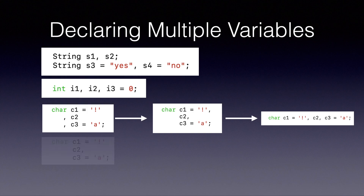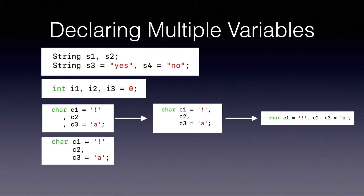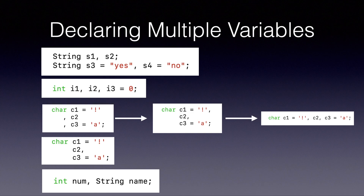Now let's look at the next one. This is not a valid statement, and the reason it's not valid is there is a comma missing after c1. As mentioned, we should always include a comma between various variables. And as a last example, this one is also not valid because we are trying to declare two different types of variables — int and String — in the same statement, which is not allowed.